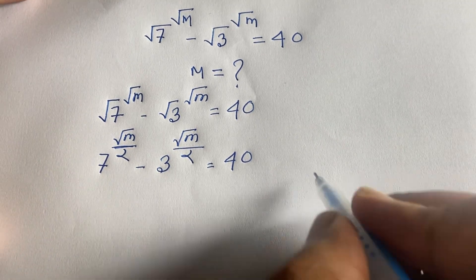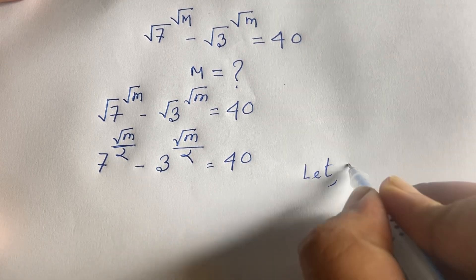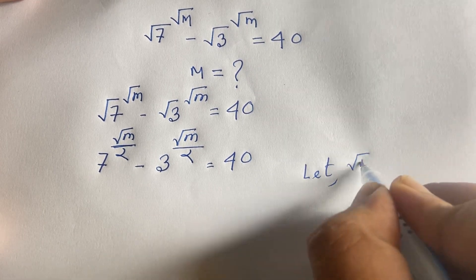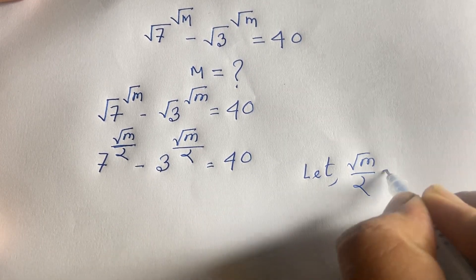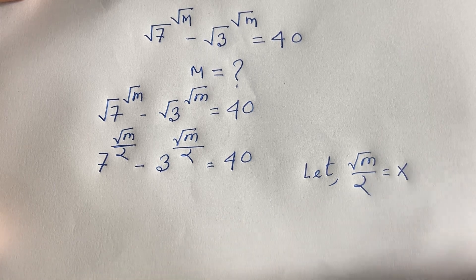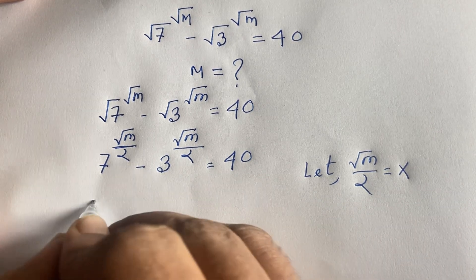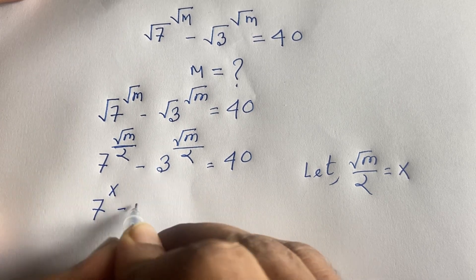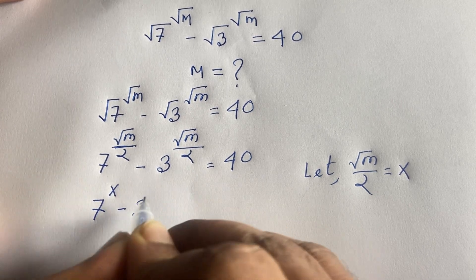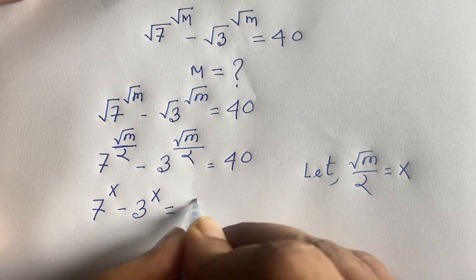Now let square root of m over 2 equal x. With this substitution, the equation becomes: 7 to the power x minus 3 to the power x is equal to 40.